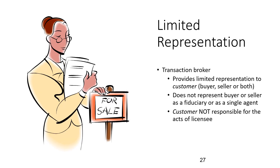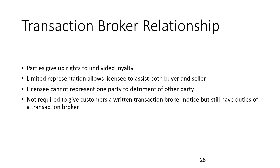In the transaction broker relationship, that is limited representation to the customer — either the buyer, the seller, or both. It does not mean you are representing the buyer or the seller as a fiduciary or as a single agent, and the customer is not responsible for the acts of the licensee. In a transaction broker relationship, the parties give up the right to undivided loyalty. Limited representation allows the licensee to assist both the buyer and the seller, but the licensee cannot represent one party to the detriment of another.